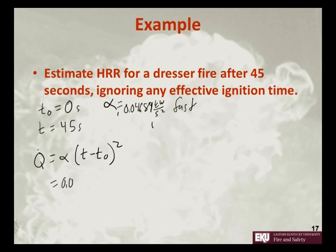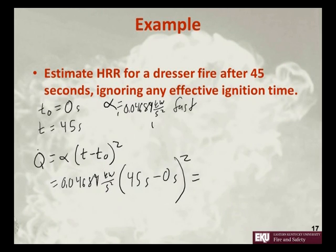We have 0.04689 kilowatts per second squared times 45 seconds minus 0 seconds squared. So this is going to be equal to 94.9 kilowatts.